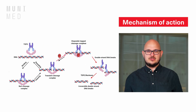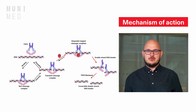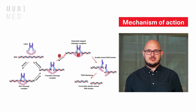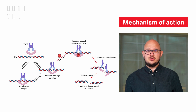Etoposide belongs to the class of medications called topoisomerase inhibitors. Its mechanism of action involves binding to the enzyme DNA topoisomerase II and inhibiting its function. By doing so, etoposide prevents the unwinding of DNA strands during replication. Therefore, it is a cell cycle specific agent with activity in the late S and G2 phases.